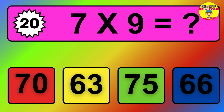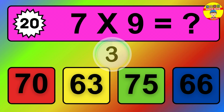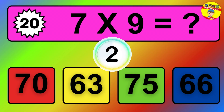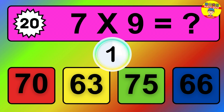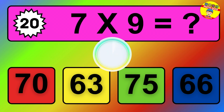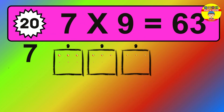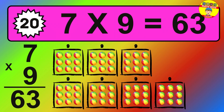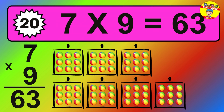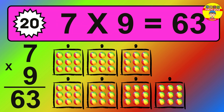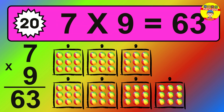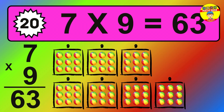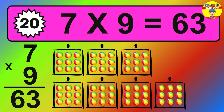Question twenty: seven times nine equals what? The answer is: seven times nine is 63. To calculate, we have seven groups with nine balls each one. So how many balls do we have? 63 balls.